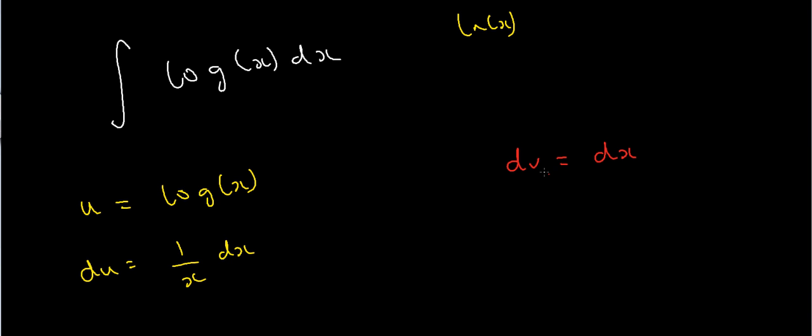So dv is just dx. And when I integrate dv equals dx, I just get, quite simply, v equals x. Okay, so that's the first step done.